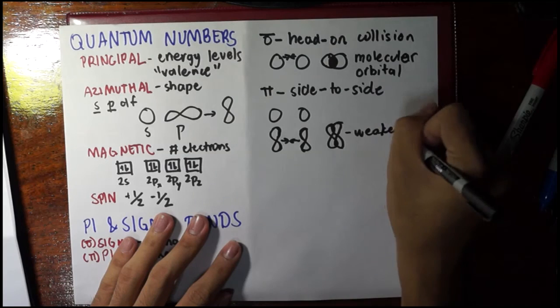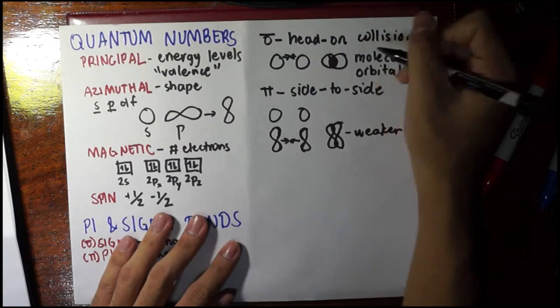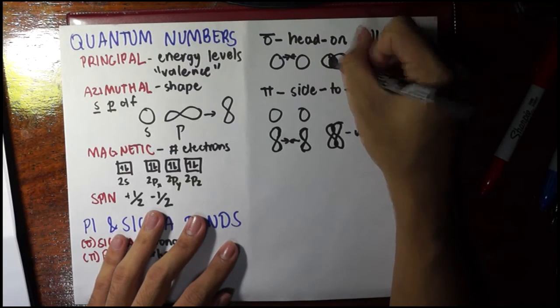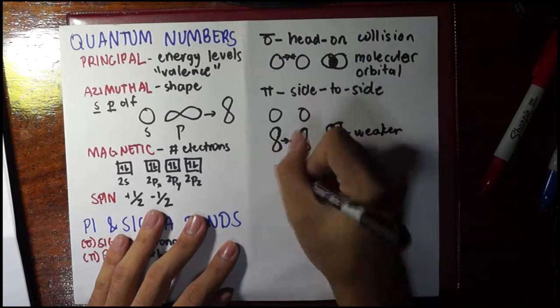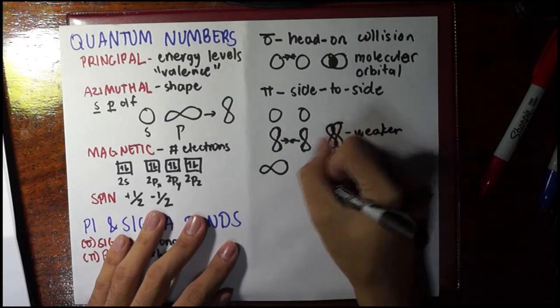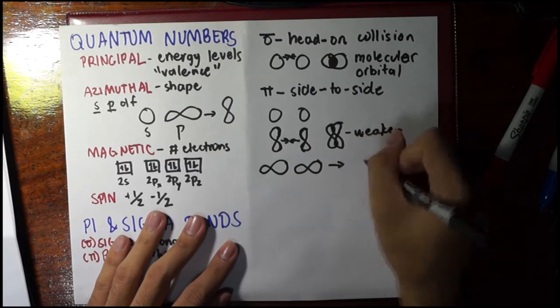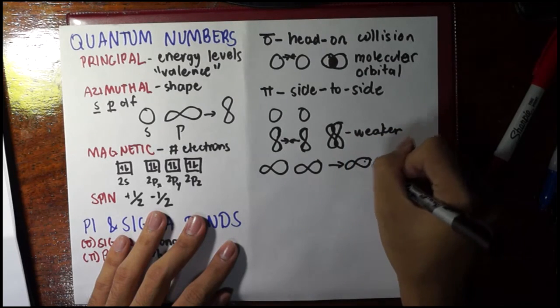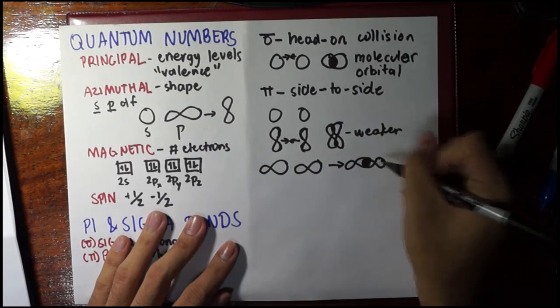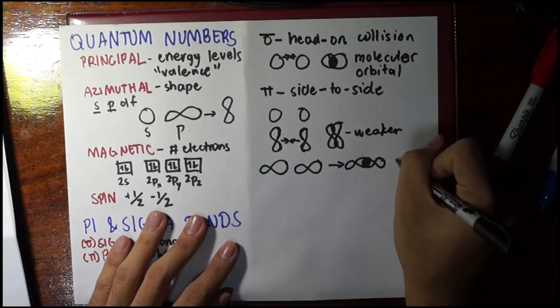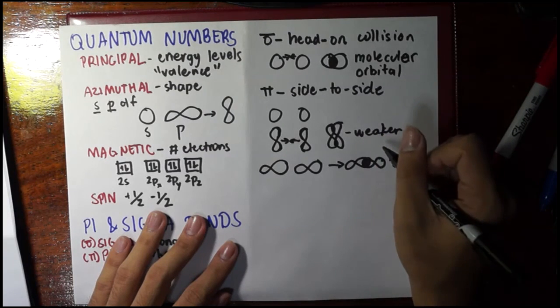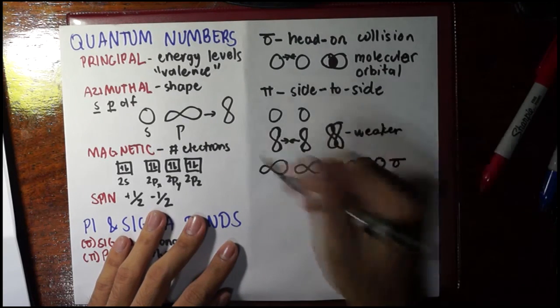As compared to this one where the area of fusion is large, or the area where they combine is large. Although pi bonds can also have a head-on collision like this, and this will dissolve into something like this, and this would be a sigma bond.